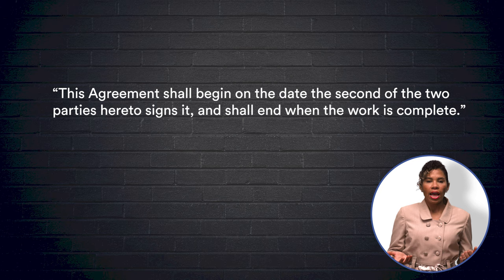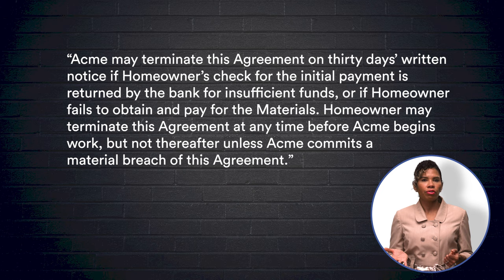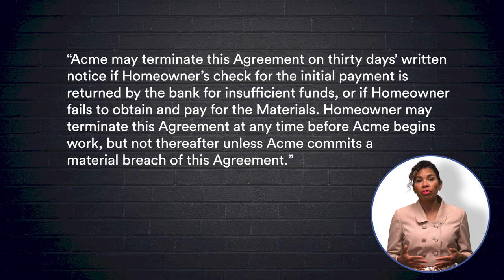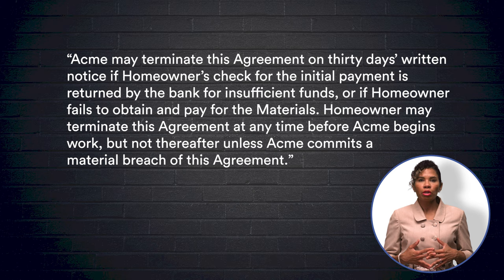For a contract break, there are termination rights, such as: "Acme may terminate this agreement on 30 days written notice if homeowner's check for the initial payment is returned by the bank for insufficient funds, or if homeowner fails to obtain and pay for the materials. Homeowner may terminate this agreement at any time before Acme begins work, but not thereafter unless Acme commits a material breach of this agreement."